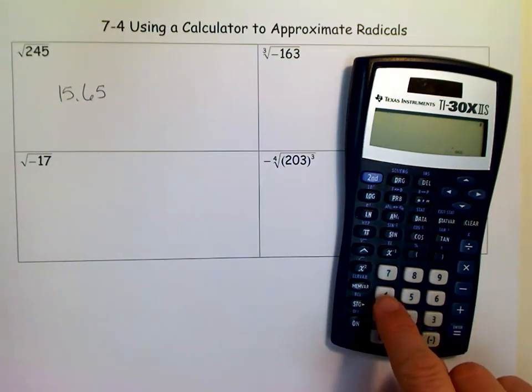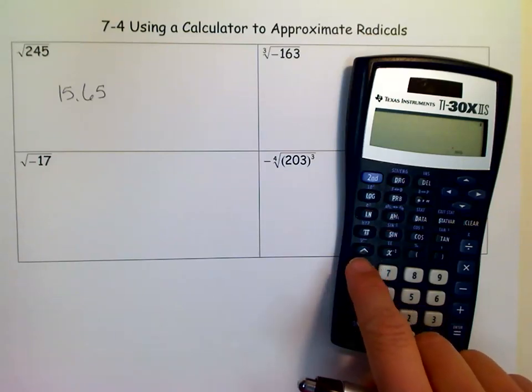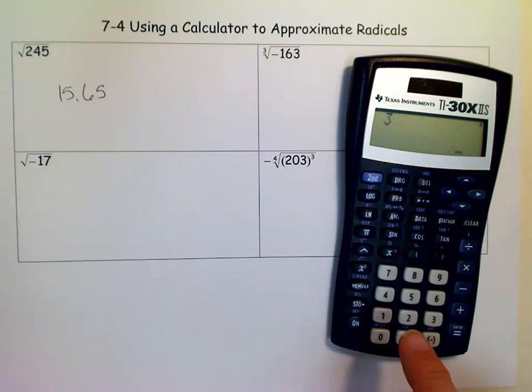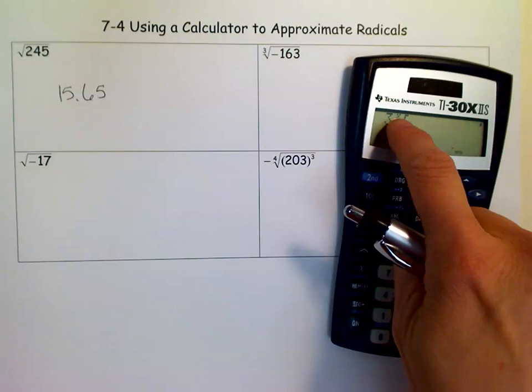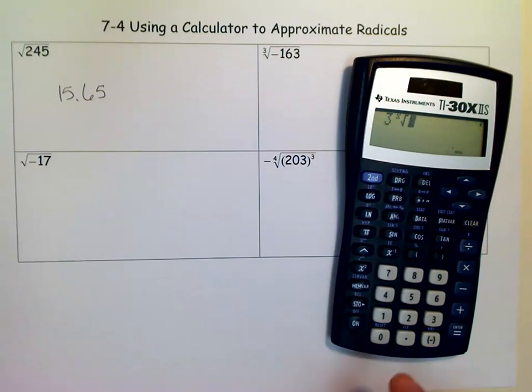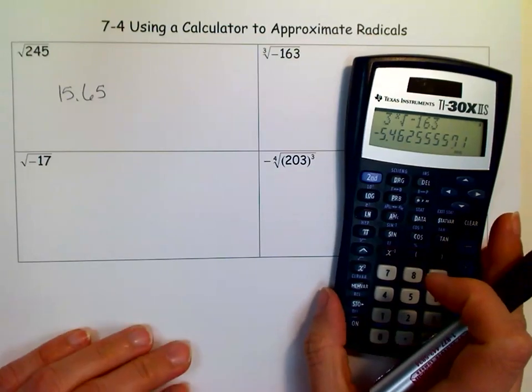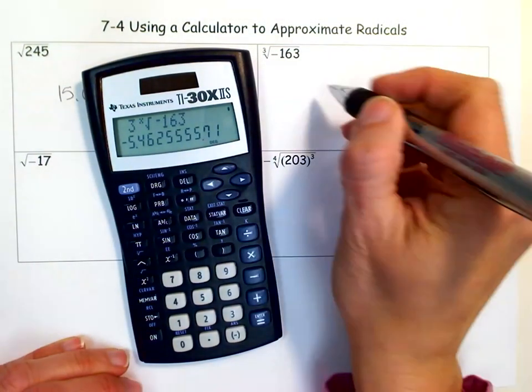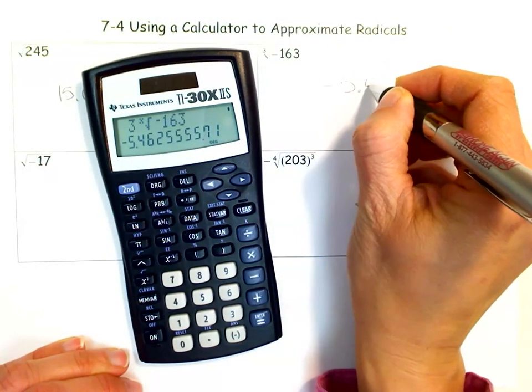There's a key right here with a caret. There's an x as an index, which means we actually have to enter our index first. And then we hit that key. So that little x right there means the 3. And then you enter negative 163, and you get negative 5.46.